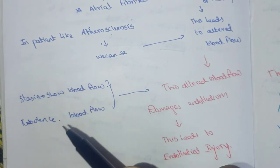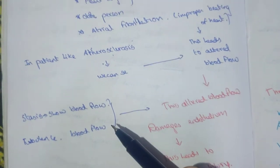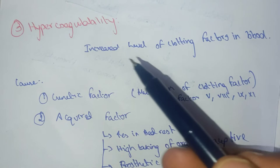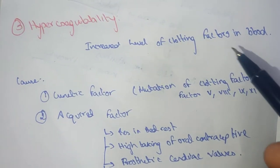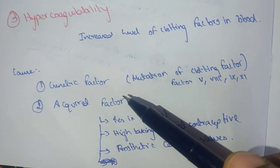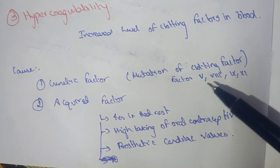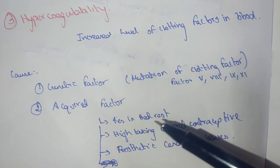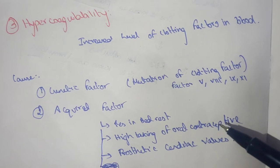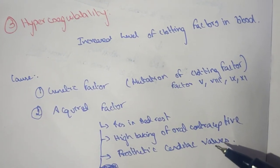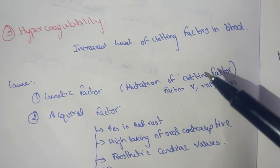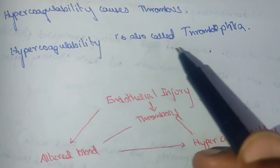Stasis means low blood flow, and turbulence means improper blood flow — both fall under altered blood flow. Hypercoagulability is an increase in the level of clotting factors in the blood. It can be caused by genetic factors such as mutation of clotting factors 5, 8, 9, and 11, or acquired factors such as increased bed rest, reduced physical activity, high intake of oral contraceptives, and prosthetic cardiac valves. This hypercoagulability is also known as thrombophilia and causes thrombus formation.